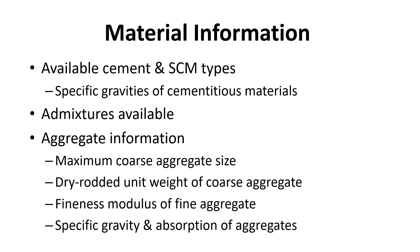Typically there's going to be material information you need to understand for your location — what cements are available, fly ashes, slags, silica fume, whatever cementitious materials are available, as well as the admixtures available for that ready-mix producer. You also need aggregate information. These are all requirements of doing a basic mix design — you need to have this.